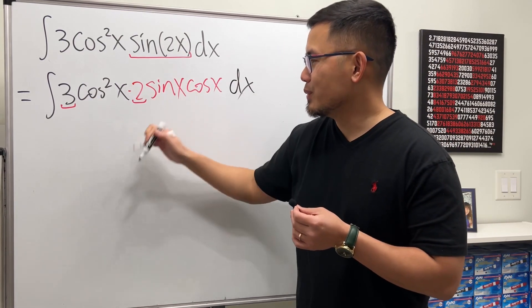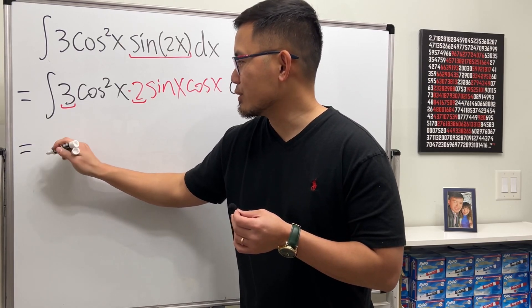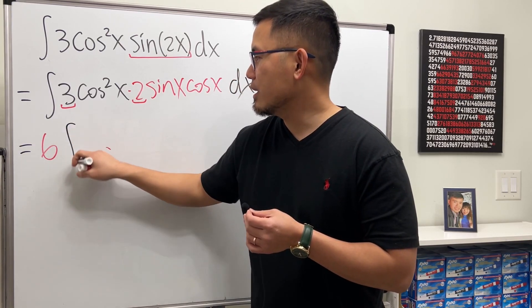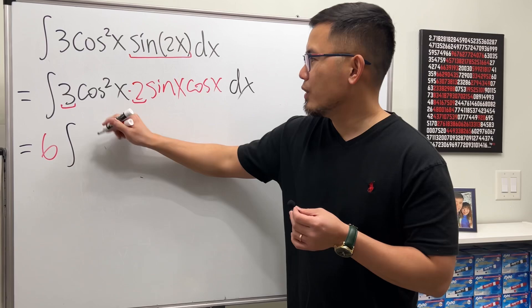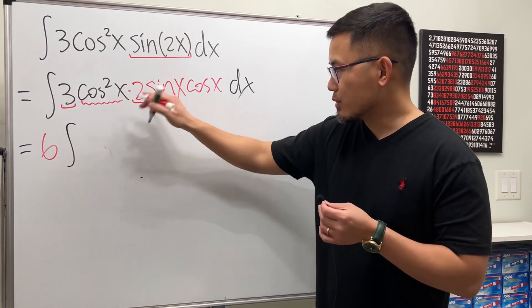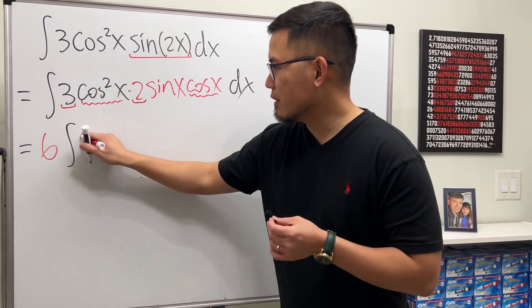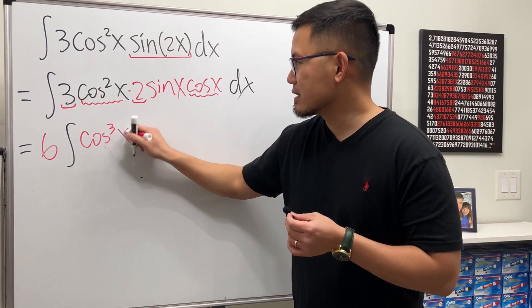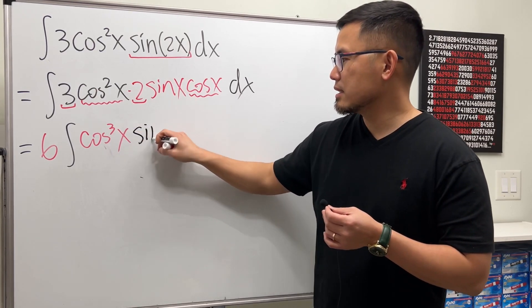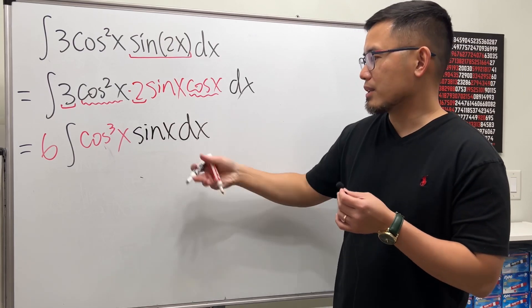And now have a look, 3 times 2 we get 6, and let's put it on the outside. And then we have the integral, and then here we have cosine squared times cosine to the third power x, and then here we have the sine x dx. So that's the cleanup.